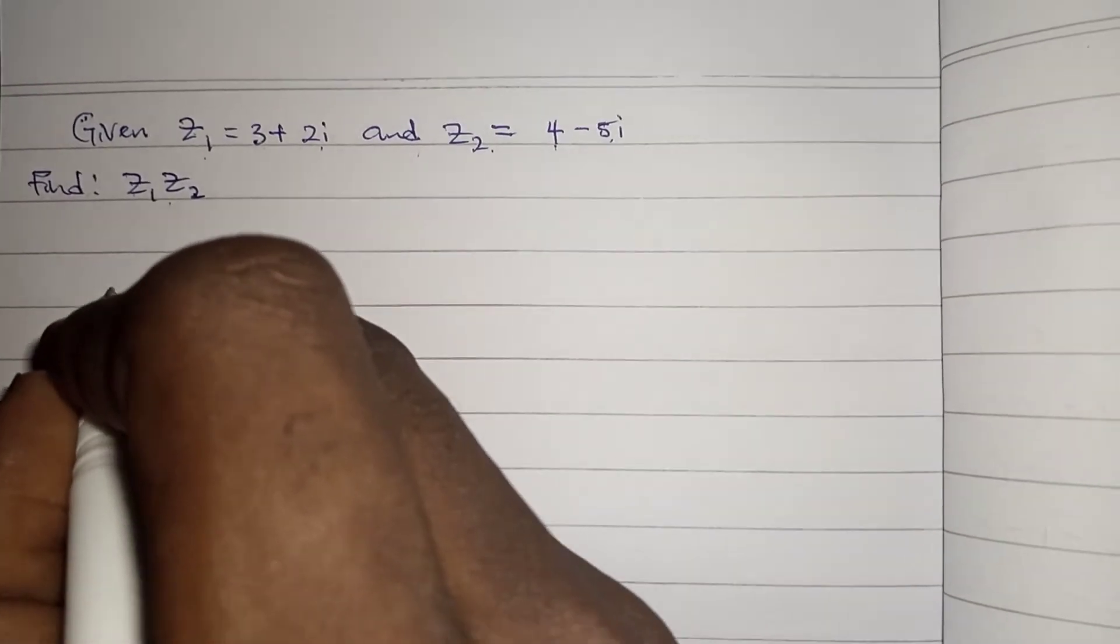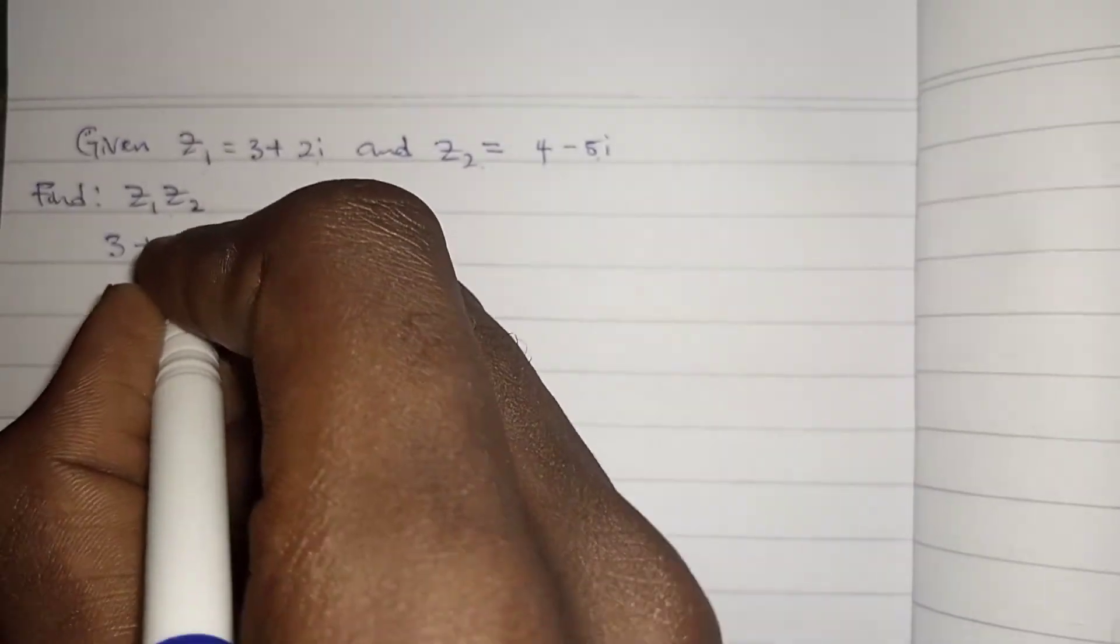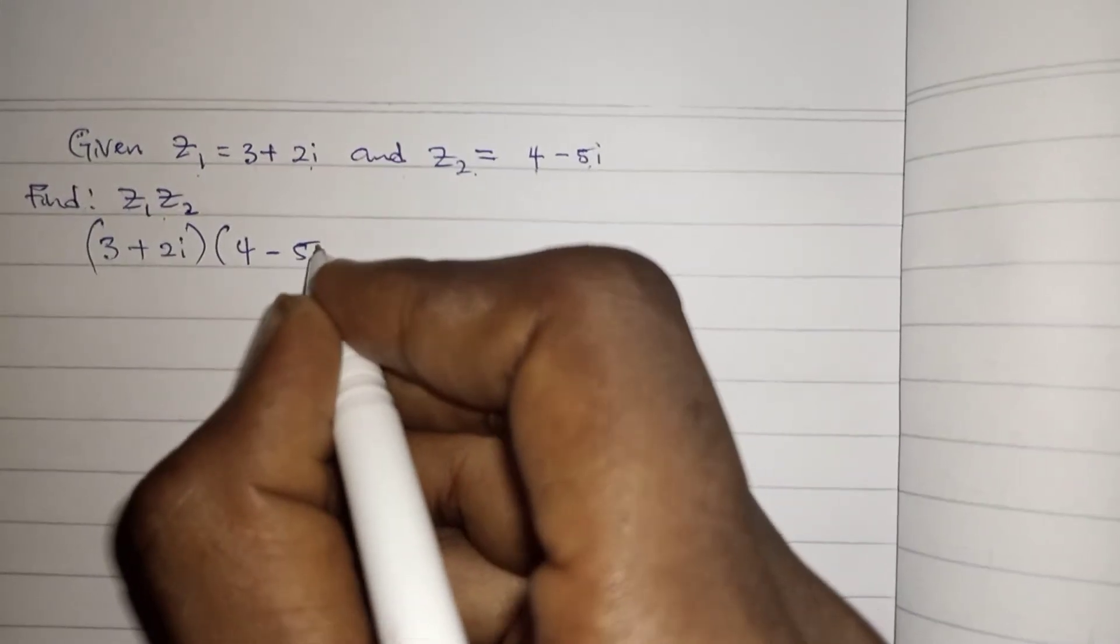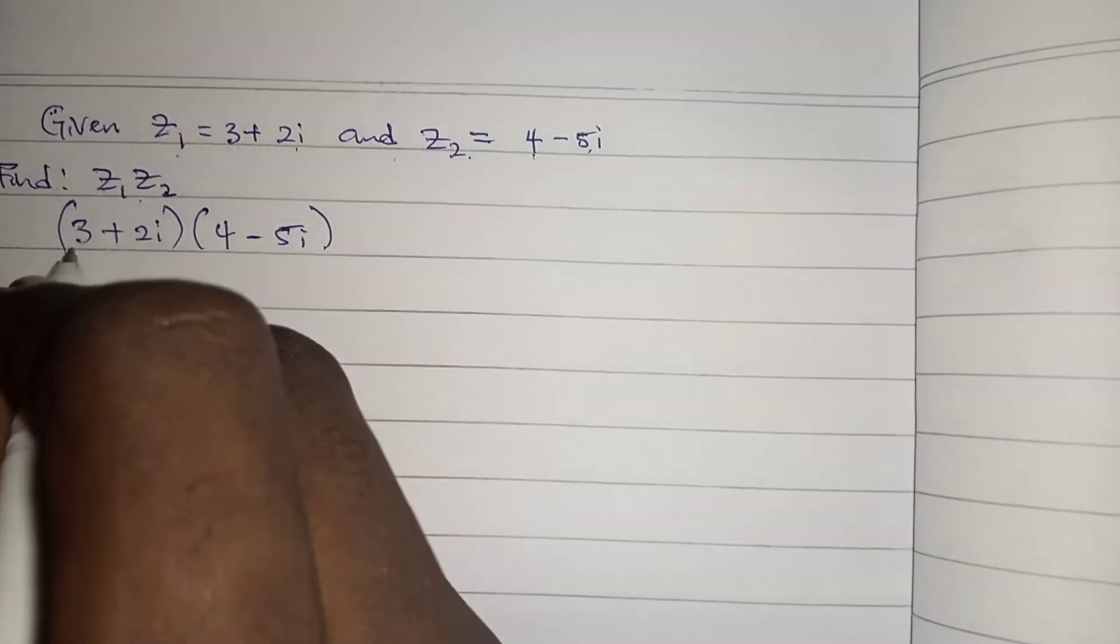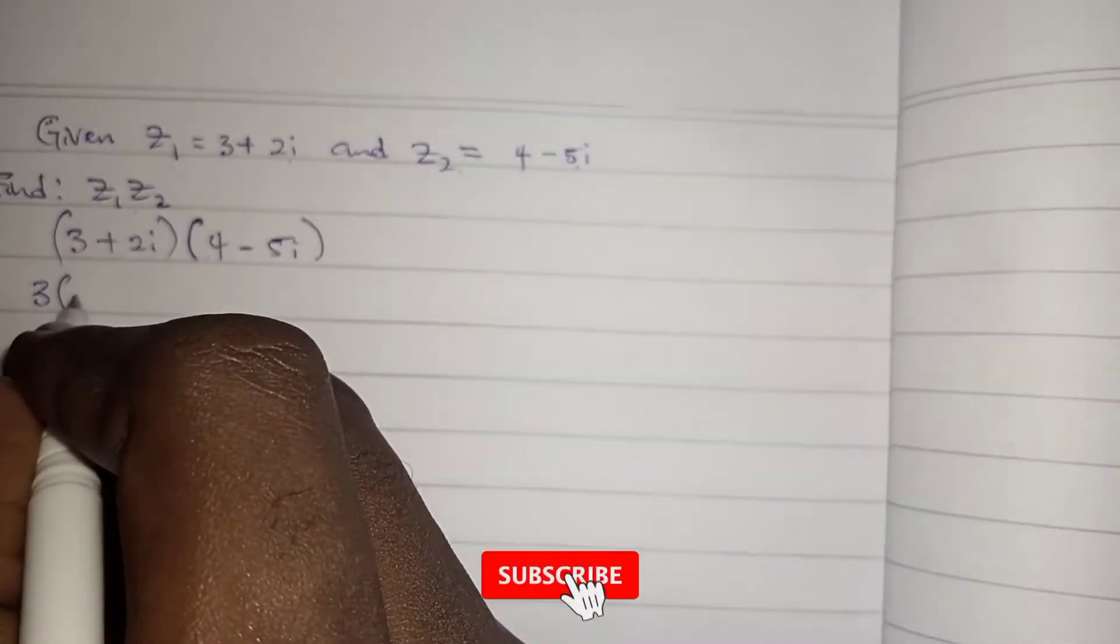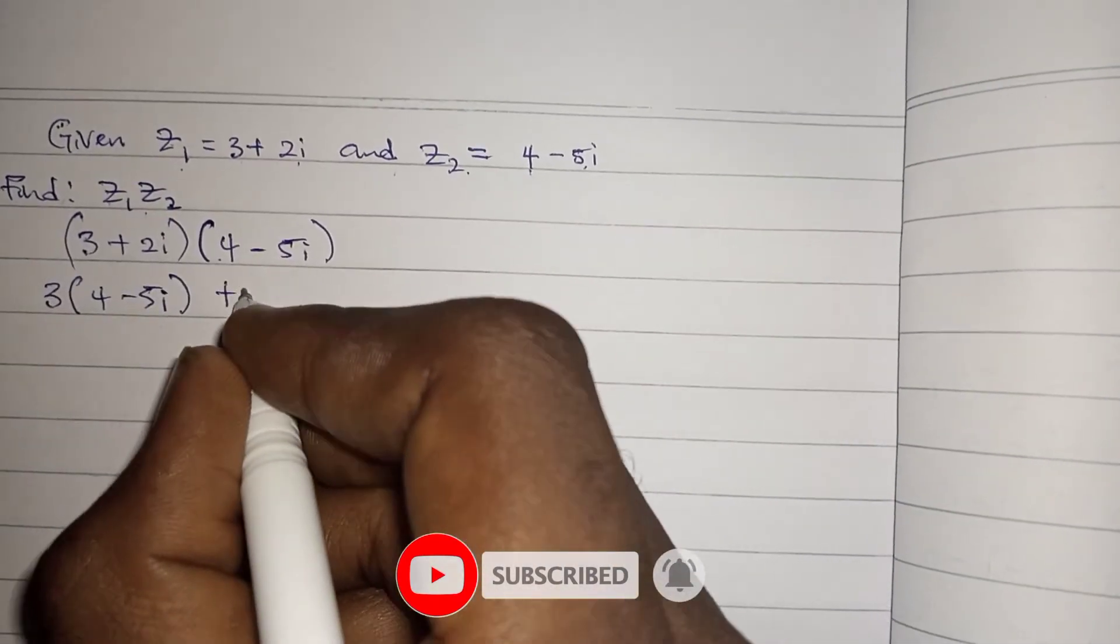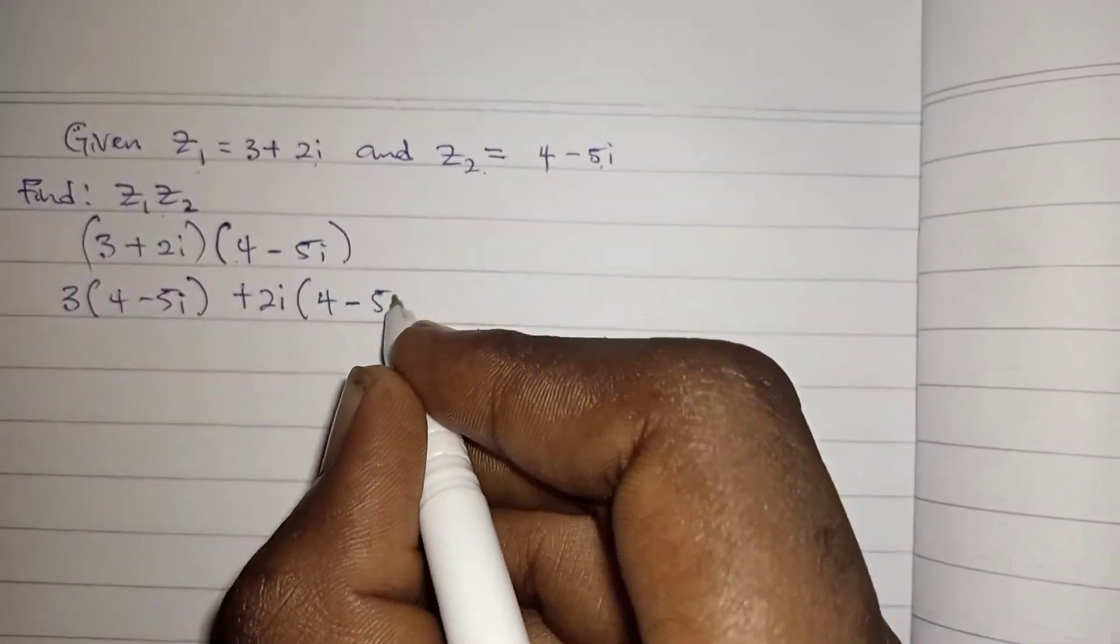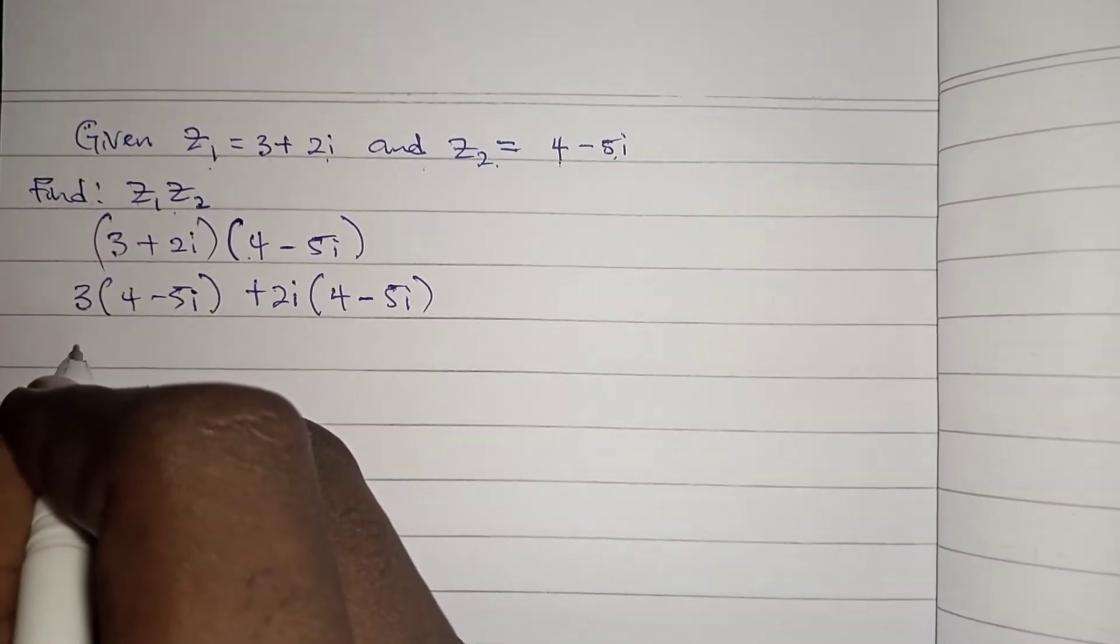So solving that we have 3 plus 2i, that's our z1, times 4 minus 5i, that's our z2. Now with normal expansion we bring this out then put this in bracket 4 minus 5i, we'll bring this out plus 2i and keep this in bracket 4 minus 5i.